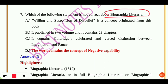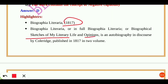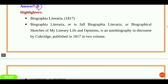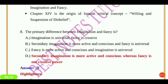Next question: which of the following statements is not correct about Biographia Literaria? The concept of negative capability belongs to Keats, not Coleridge. Biographia Literaria, or 'Biographical Sketches of My Literary Life and Opinions,' is an autobiography in discourse by Coleridge, published in 1817 in two volumes. It contains 23 chapters. In the first part, Coleridge is mainly concerned with showing the evolution of his philosophical creed.